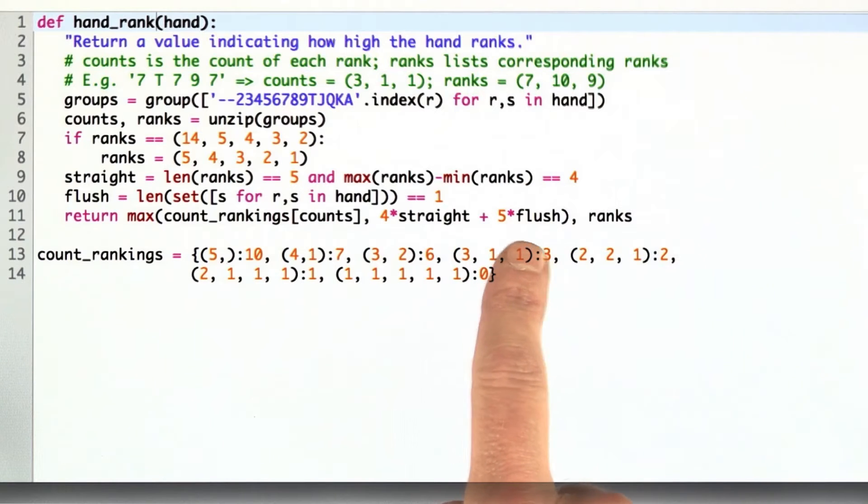Now that might seem a little confusing, but what that's doing is it's using automatic conversion of Booleans into integers and saying if straight is true, that corresponds to one, and if false, that corresponds to zero. So if straight alone is true, that will give you a four, and that's the right ranking for straight.